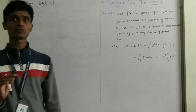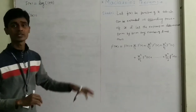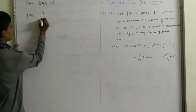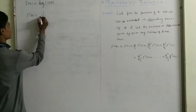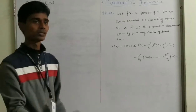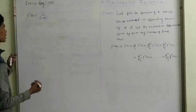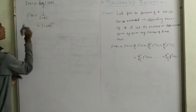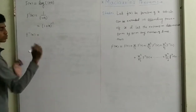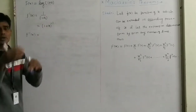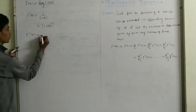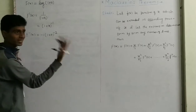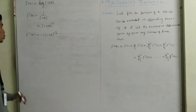So first we find out the first derivative here. f'(x): the derivative of log(1+x) — we know the derivative of log x is 1/x, and the derivative of x is 1. So the derivative of log(1+x) is 1/(1+x), and the derivative of (1+x) is 1. So we write this as (1+x)^(-1). This is the value of f'(x). Now we find out f''(x). Here we have (1+x)^(-1), so the power is multiplied first: power decreases by 1, so minus 1 minus 1 becomes minus 2. And the derivative of (1+x) is 1. So the second derivative is minus 1 upon (1+x)².